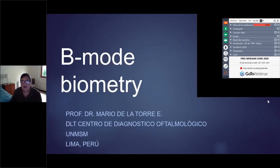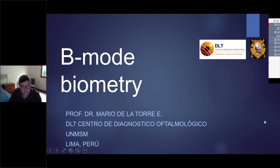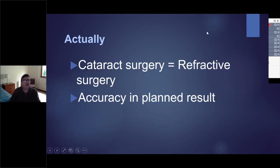It's very interesting because now we can have, normally we do biometry with A-mode, B-mode, but in cases that there is a big eye, a staphyloma posterior or something, we can use B-mode biometry. Actually, cataract surgery is a refractive surgery. The patient wants to see everything, and we look for accuracy in the planned results.